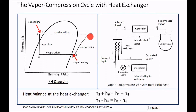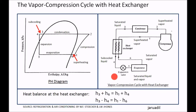Then 1 to 2 again is constant entropy compression. The heat balance at the compressor, condenser, evaporator, and expansion valve cancel out. But here, the heat balance at the heat exchanger — as you can see — is the same principle: energy in equals energy out.